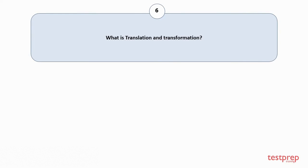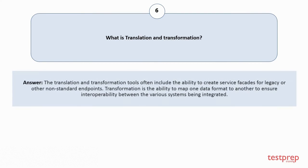Question number 6: What is translation and transformation? The translation and transformation tools often include the ability to create service facades for legacy or other non-standard endpoints. Transformation is the ability to map one data format to another to ensure interoperability between the various systems being integrated.